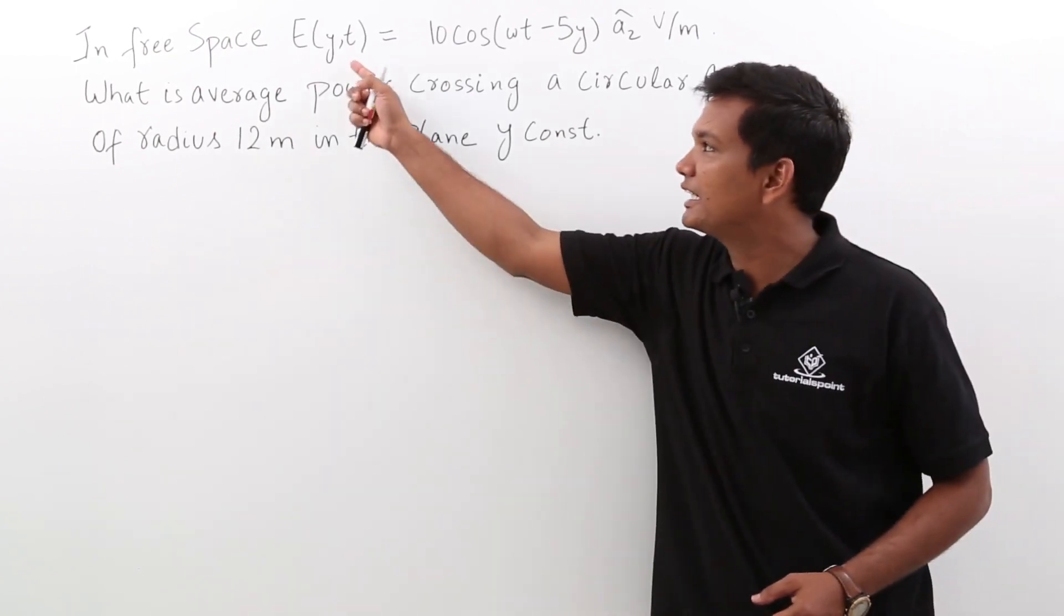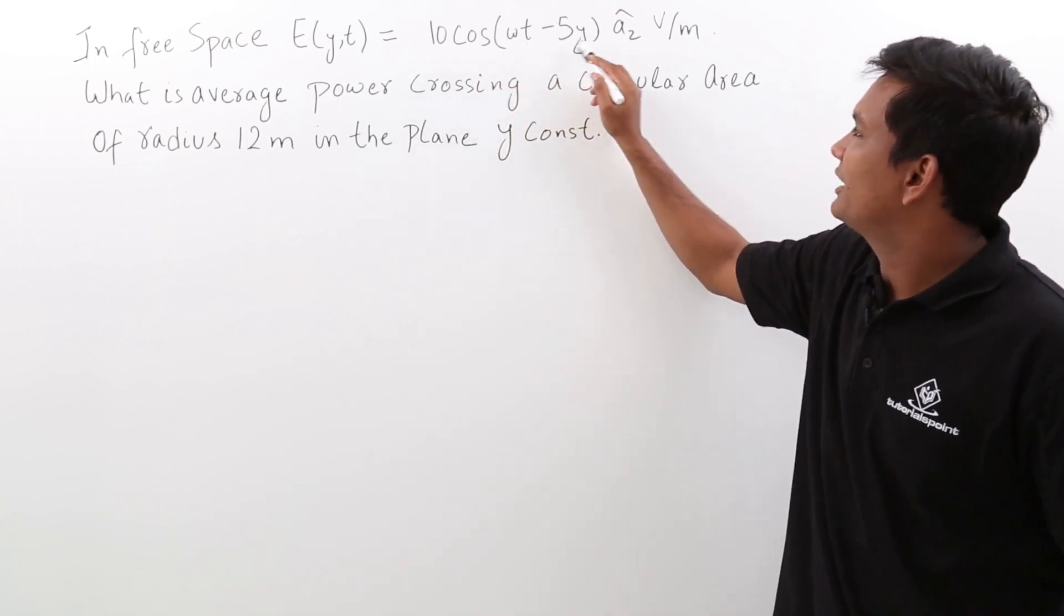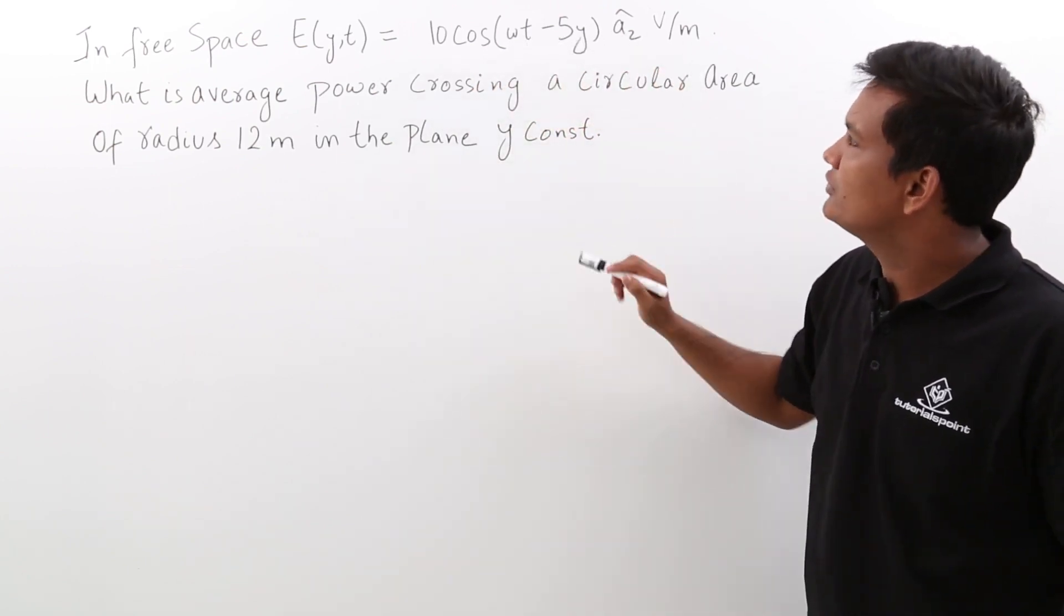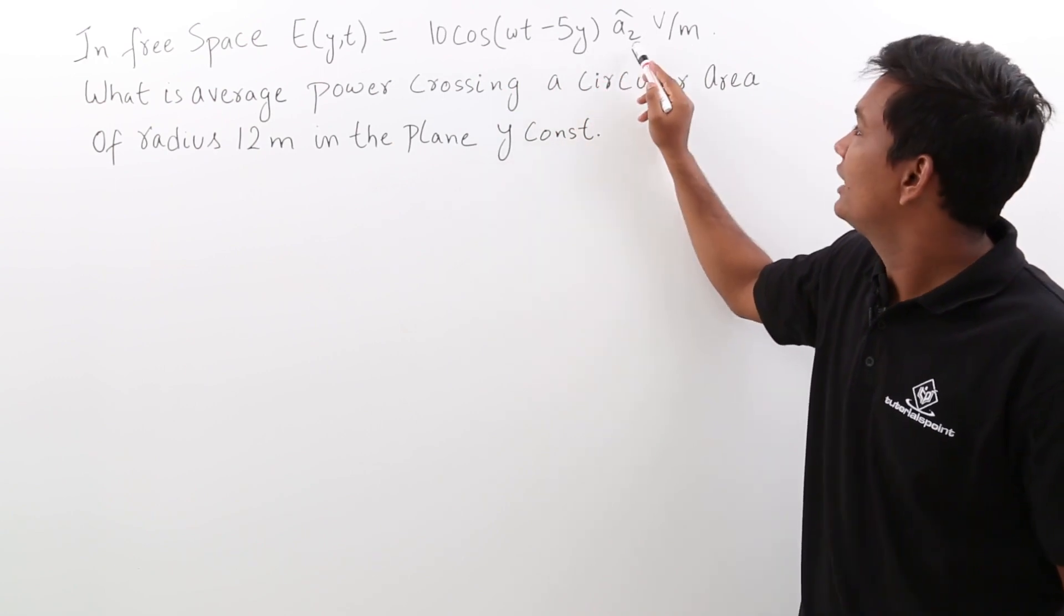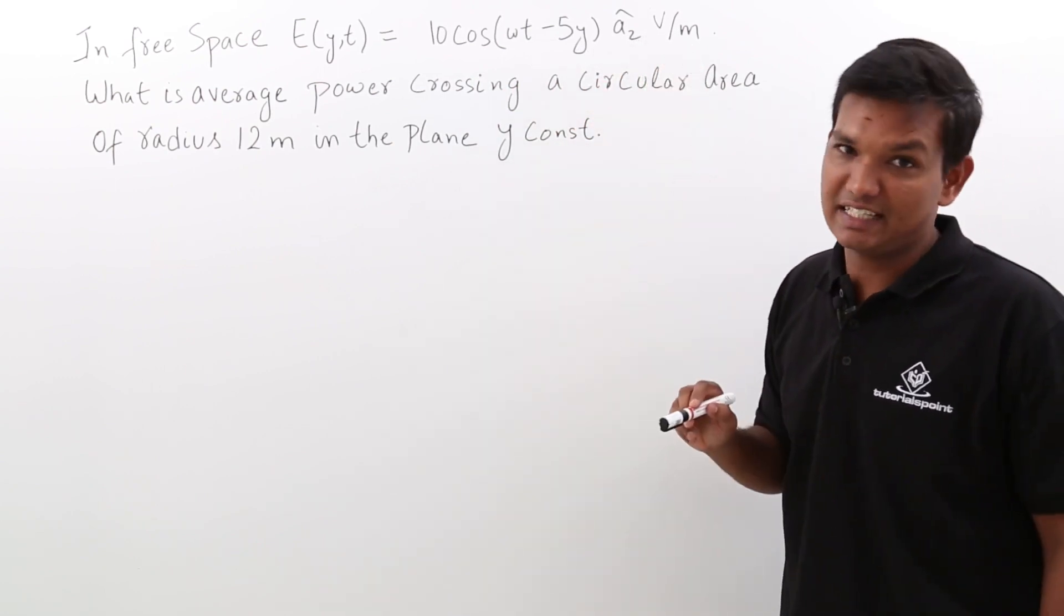It is being given that there is an electric field which is 10 cos(ωt - 5y)ẑ. Now, if you observe, it is propagating in plus y axis and the variation of electric field is along the z axis.